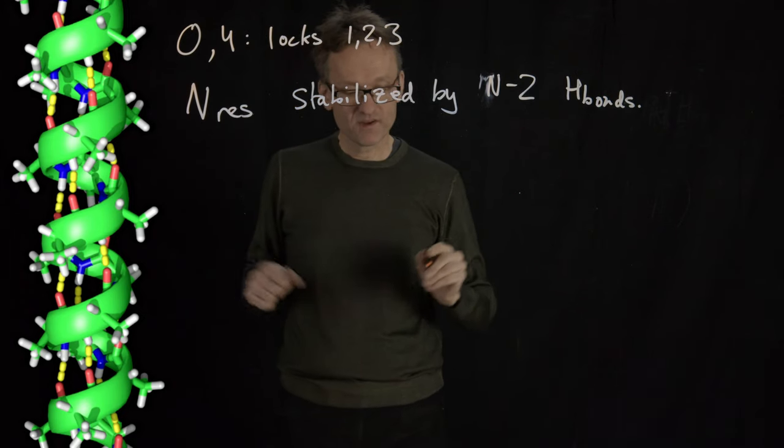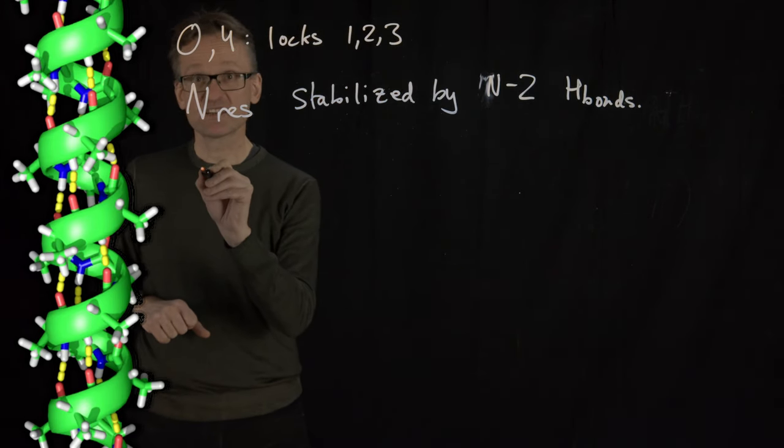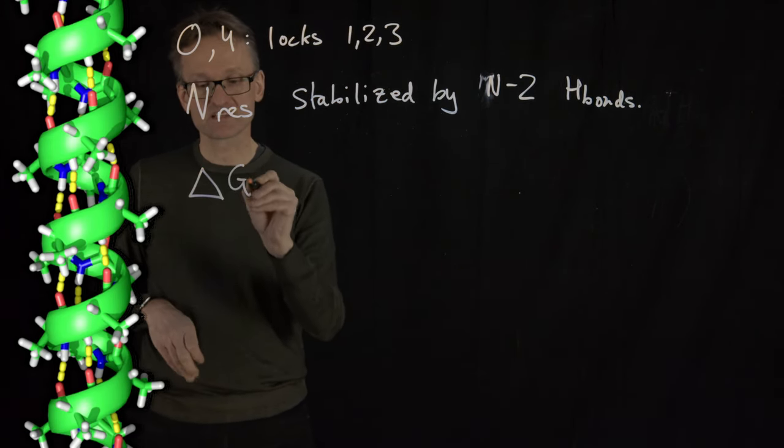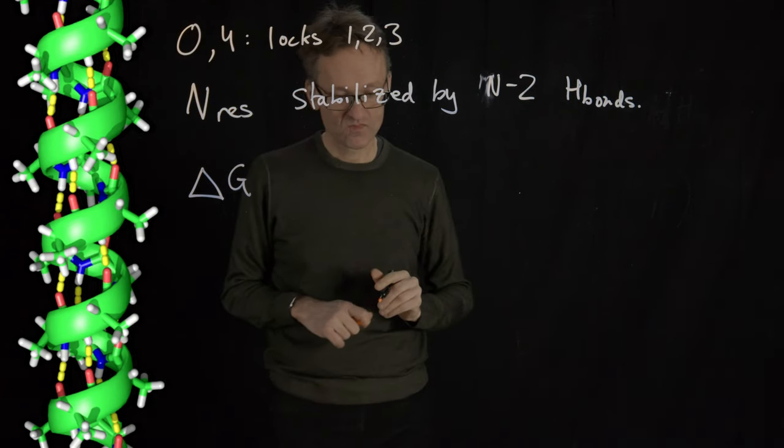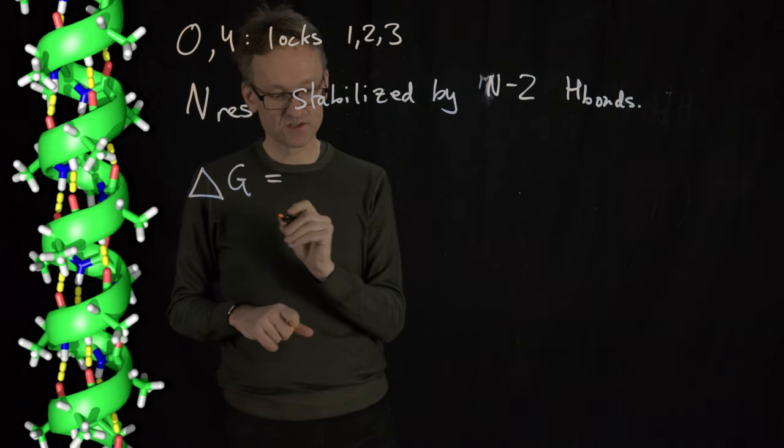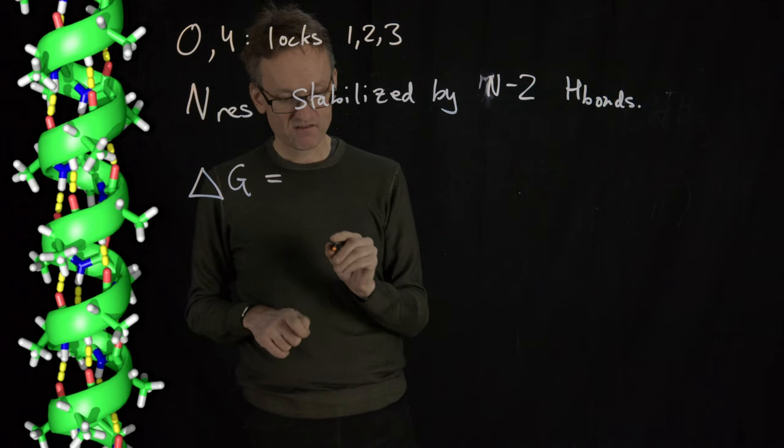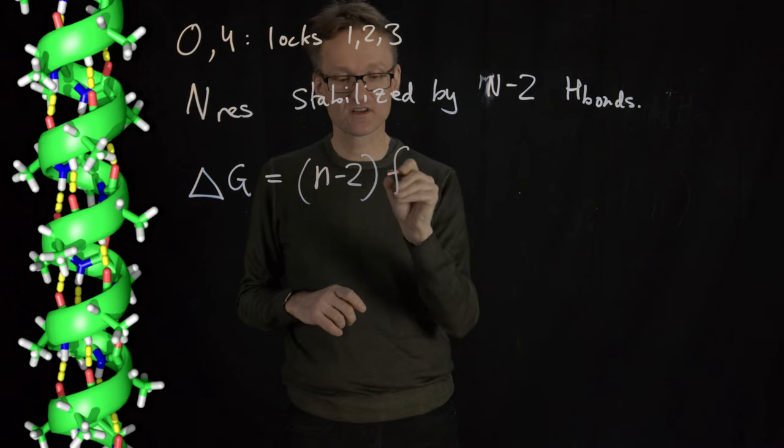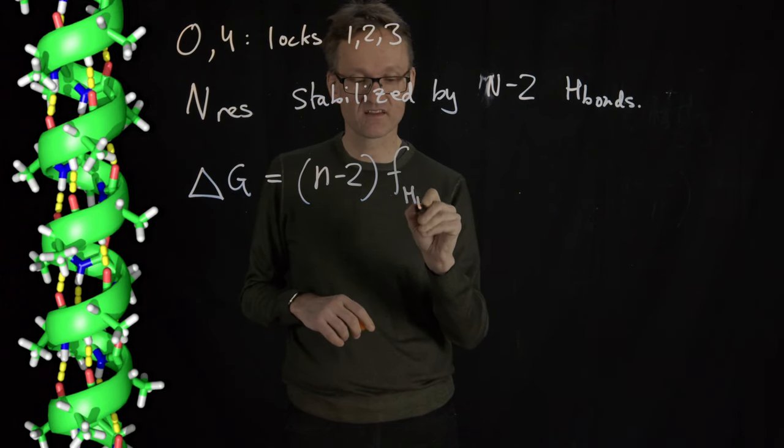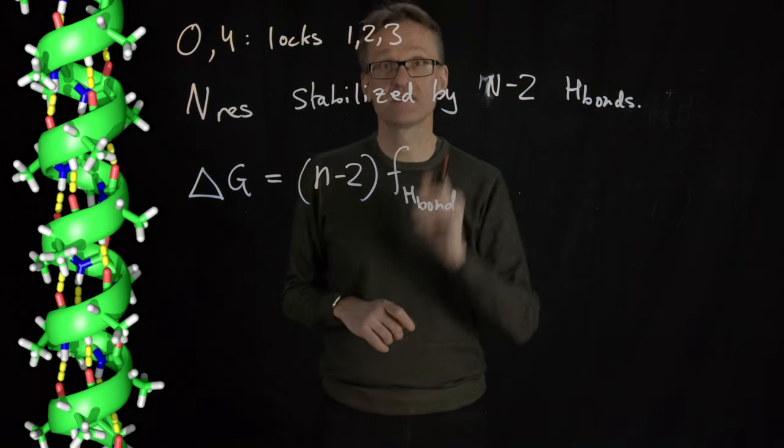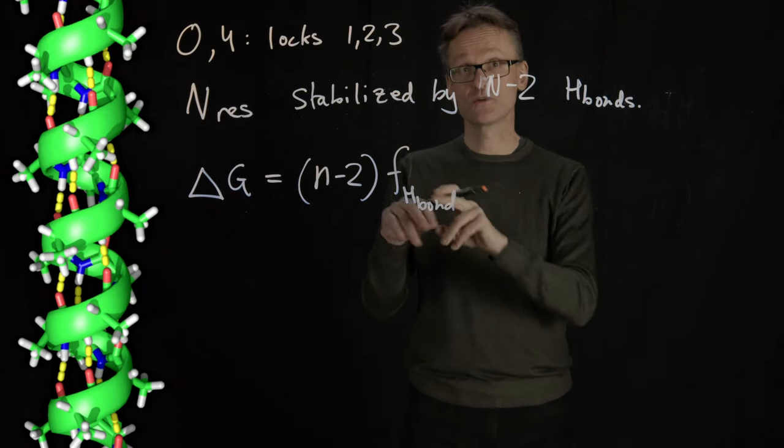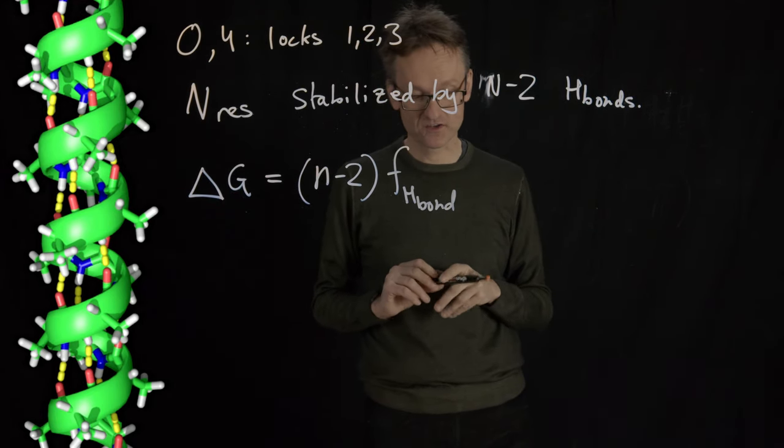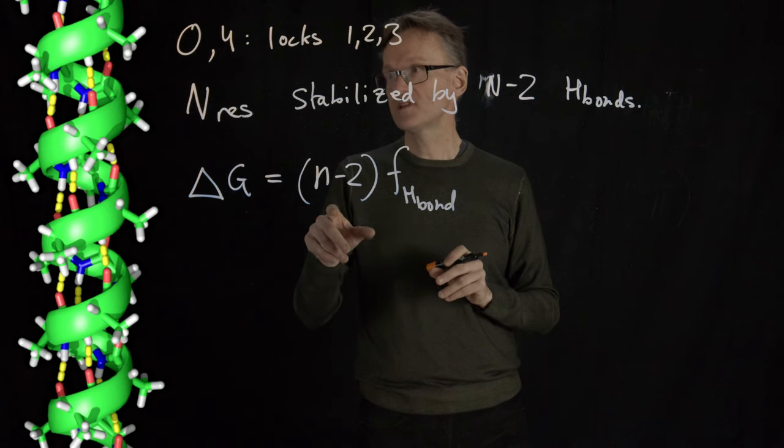So if we say that what is the delta G for the helix? That's going to mean for n residues, first I have n minus 2 hydrogen bonds, and that's good. Let's call that F. That's a good term. I'm gaining enthalpy for a hydrogen bond.